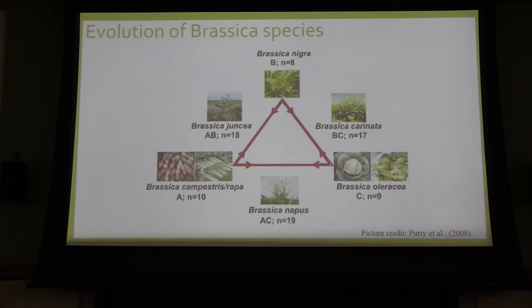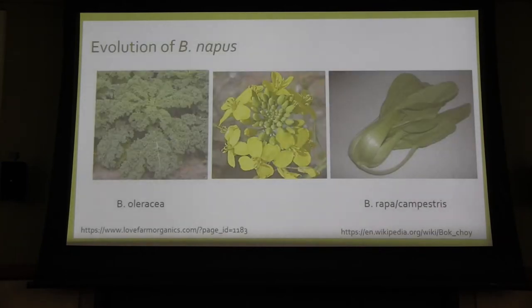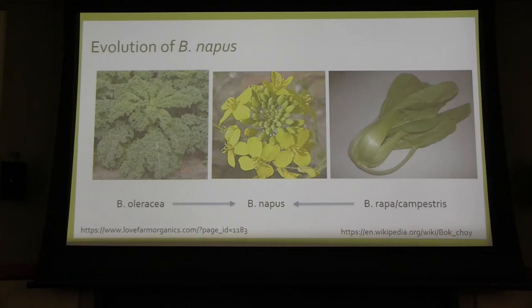For the purpose of today's presentation, I'll be focusing on interspecific hybridization of Brassica napus. The evolution of Brassica napus was created by Brassica oleracea, which is kale, and Brassica rapa/campestris, such as bok choy. They went through interspecific hybridization to create Brassica napus, commonly known as canola.